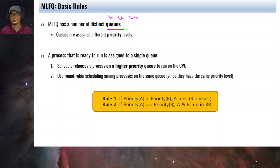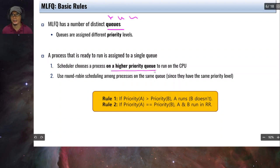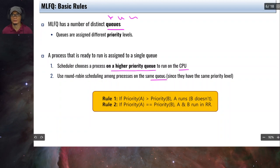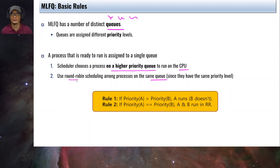A process that is ready to run is assigned to a single queue. When a new process arrives, it will be assigned to a queue. The scheduler, given this set of distinct queues, will choose a process on a higher priority queue to run on the CPU. In case there are multiple processes assigned to the same queue — meaning they have the same priority level — then round-robin scheduling will be used. This is a form of priority scheduling where the priority is defined by the queue where the process resides.